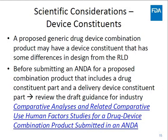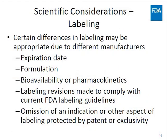Another scientific consideration is the existence of a device constituent. A proposed generic drug-device combination product may have a device constituent that has some differences in design from the RLD. Before an application is submitted, we recommend that prospective applicants review the comparative analysis guidance. The last item for consideration is labeling of the proposed drug product. Certain differences in labeling between the generic drug product and the RLD may be appropriate due to the fact that the generic drug product and the RLD are produced or distributed by different manufacturers. These differences can include the expiration date, formulation, bioavailability, or pharmacokinetics, and labeling revisions made to comply with current FDA labeling regulations.